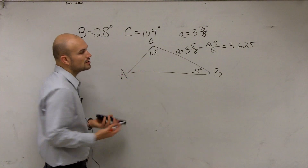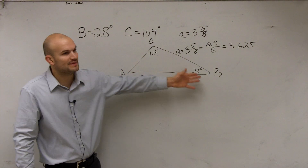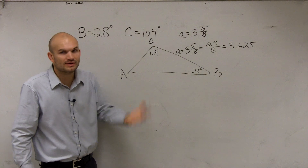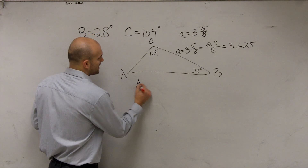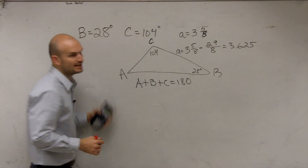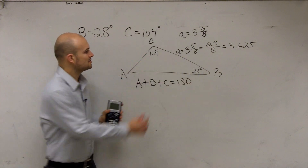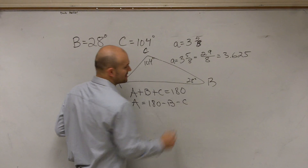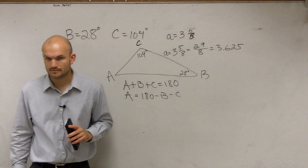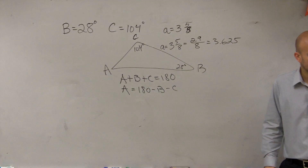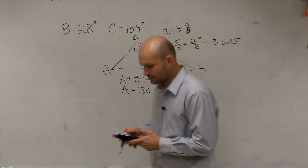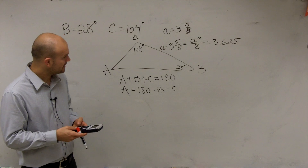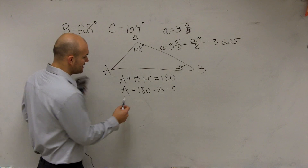To use the Law of Sines, we need to have a ratio. Right now we have angle B but not side B, we have angle C but not side C, and we have side A but not angle A. So we need to create at least one complete ratio. The only other thing I know is A plus B plus C equals 180 degrees. Since I'm given B and C, I can find A. So A equals 180 minus B minus C, which is 180 minus 104 minus 28, giving us A equals 48 degrees.